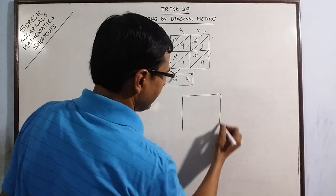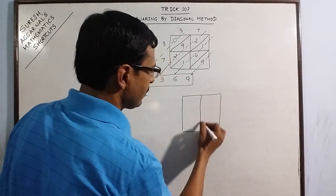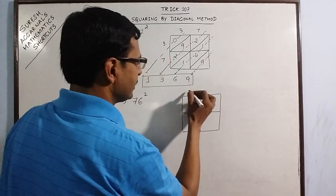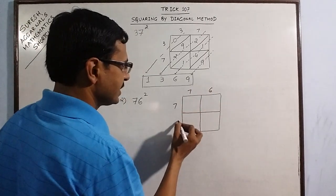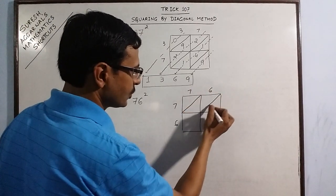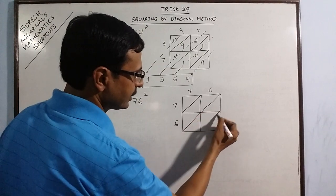Now we have a 2 by 2 matrix. Write 7, 6. 7, 6. Draw 1 diagonal. Draw the 2nd diagonal and draw the 3rd diagonal.